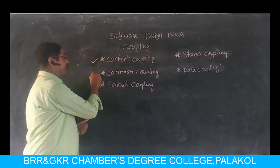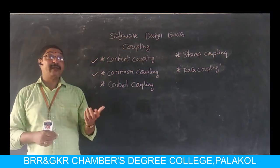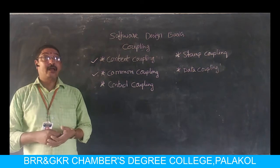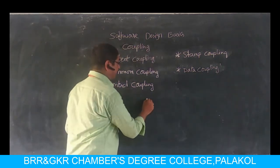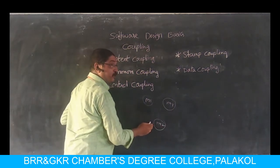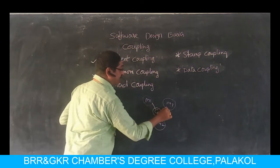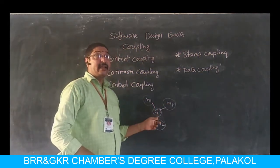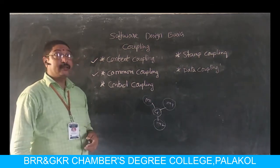The second is common coupling. When multiple modules have read and write access on the same common global data, it is called common coupling. For example, if three modules all have read and write access on a common global data item — all three modules can read and write that data — then we call it common coupling.